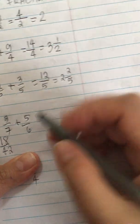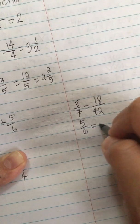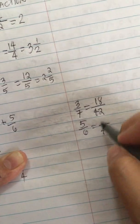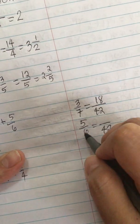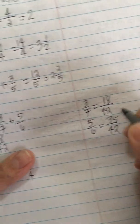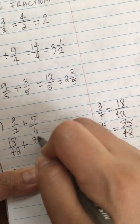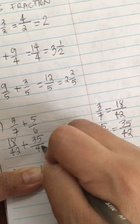Now the 5 over 6 equals something over 42. So 42 divided by 6 is 7, and 7 times 5 is 35. So now the 5 over 6 becomes 35 over 42.